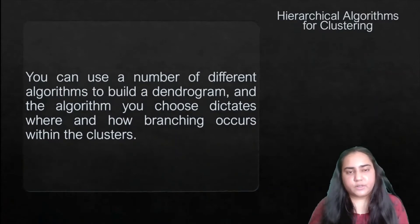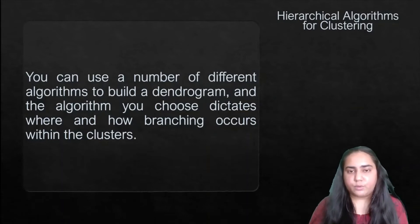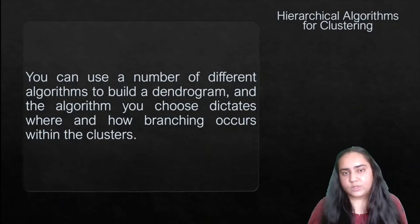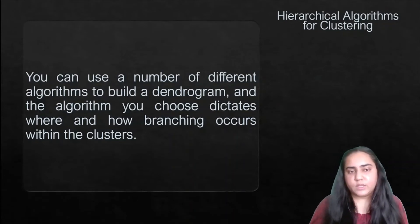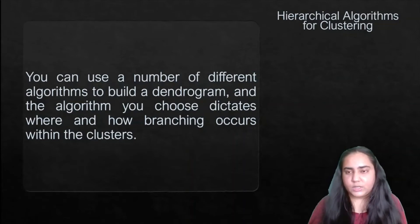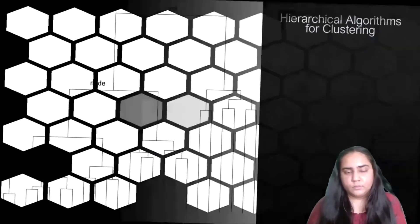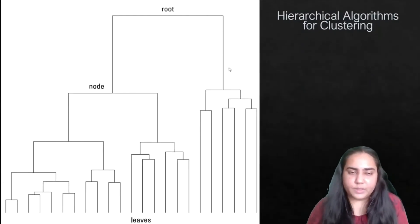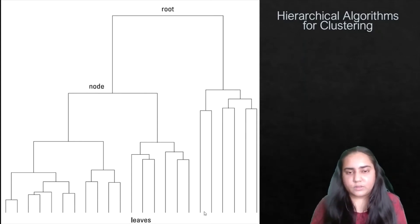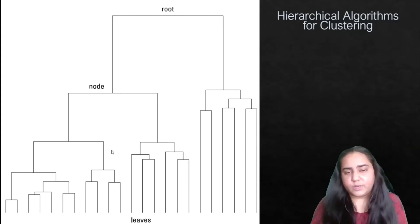You can use a number of different algorithms to build a dendrogram, and the algorithm you choose dictates where and how branching occurs within the clusters. As shown here, the leaves are all single data points, the root contains all the data, and the several nodes are combinations of multiple data points.